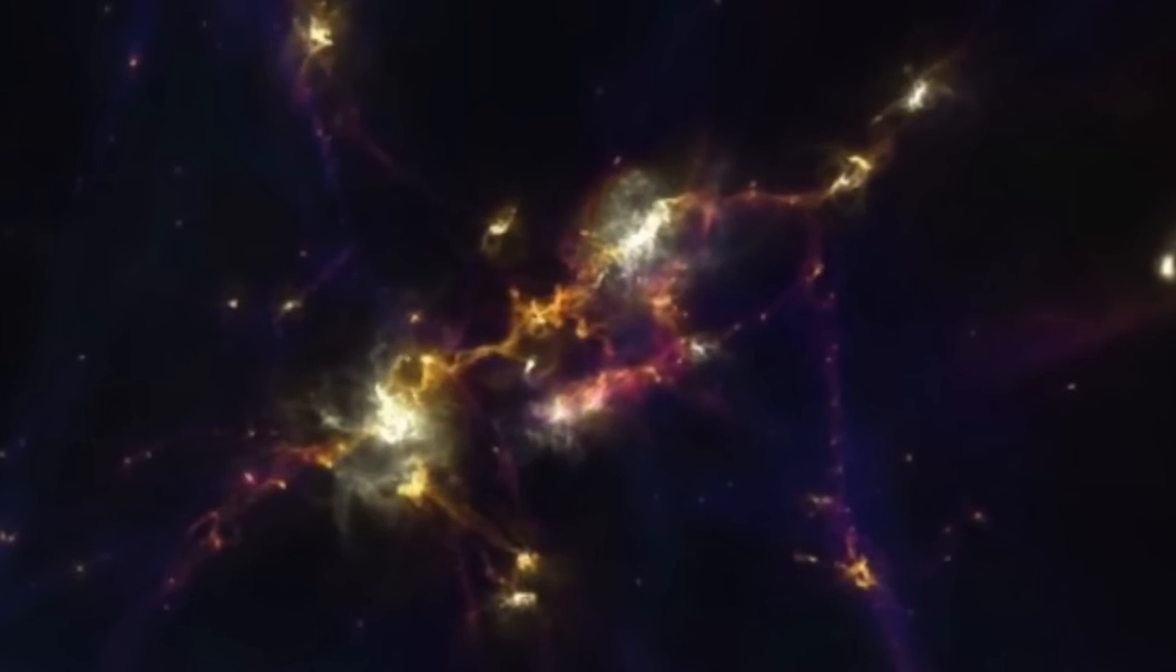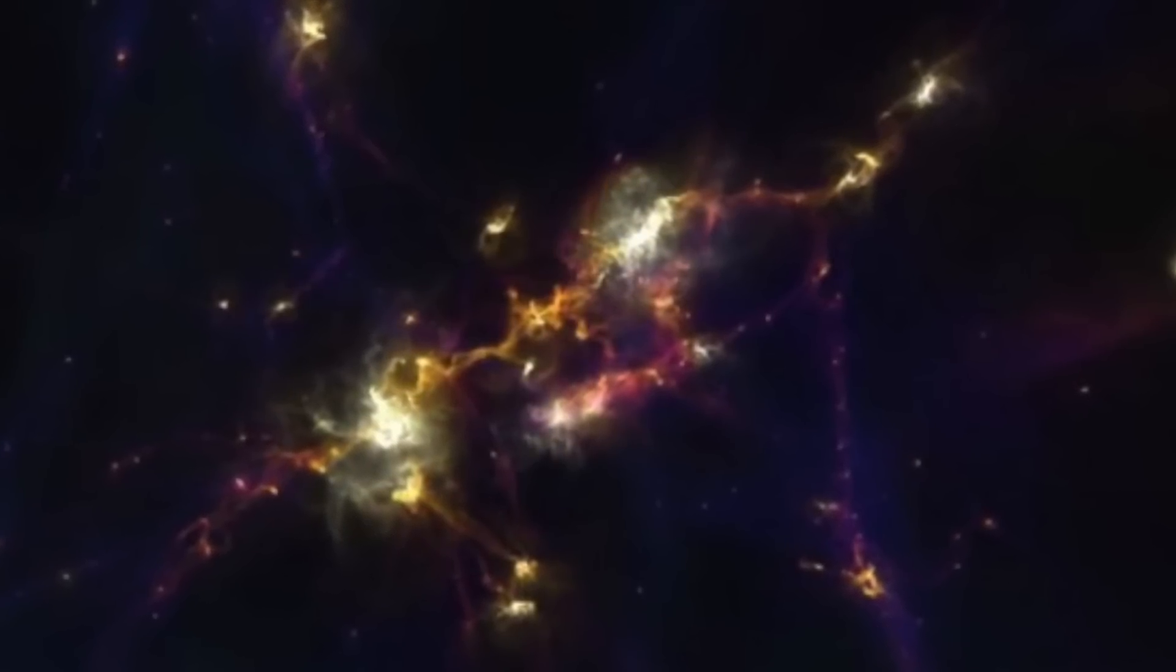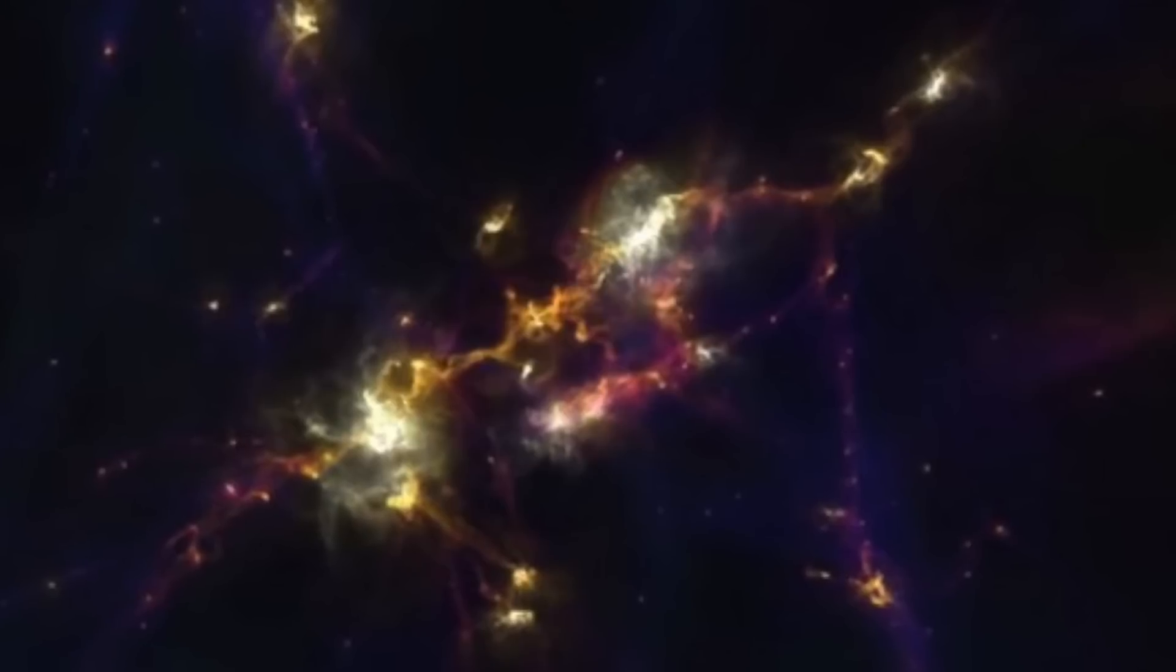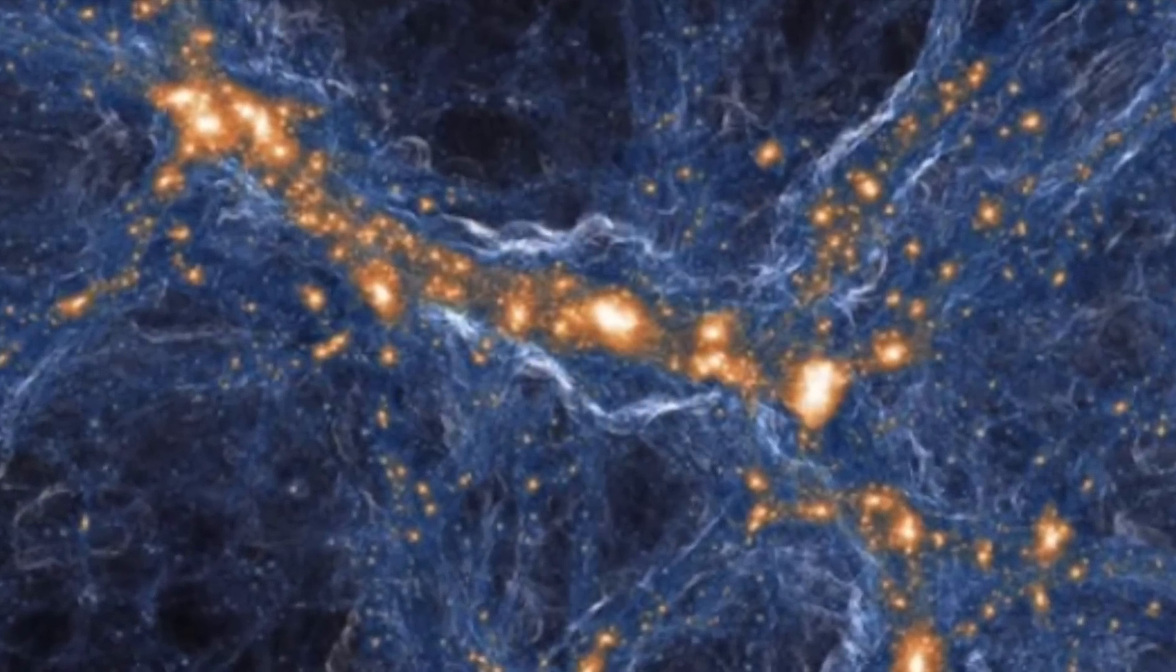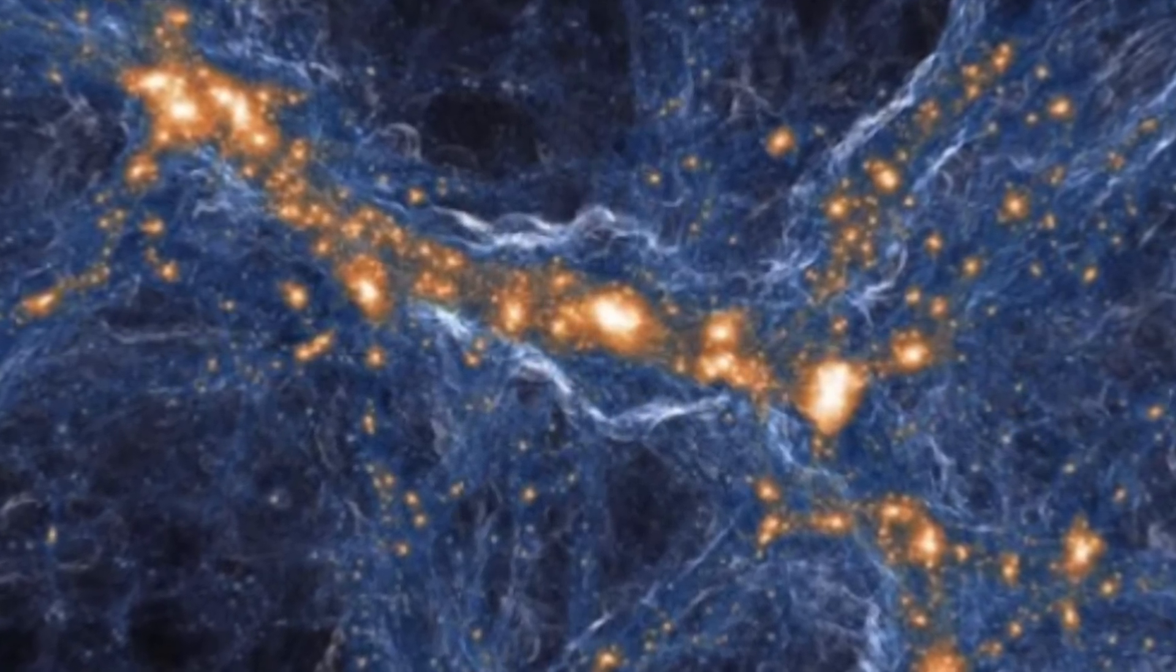Cosmic filaments are thin cylinders, with diameters spanning millions of light-years, though they can stretch for hundreds of millions of light-years in length. Despite their ginormous scale, they rotate, making them the largest spinning structures in the universe.